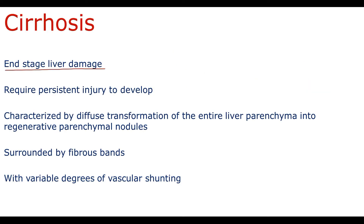The second characteristic is that for cirrhosis development, the injury must be persistent. Because once the injury is interrupted — for example, with cessation of alcohol consumption — reversion of fibrosis may happen.